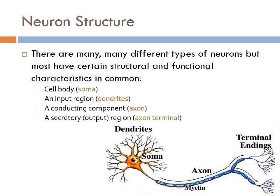Within the nervous system there are multiple different types of neurons, but most of them have certain characteristics in common with each other. One of those characteristics is the soma — the cell body. That part has all the normal cell parts: mitochondria, ribosomes, a nucleus, and all the things that you typically associate with a cell.